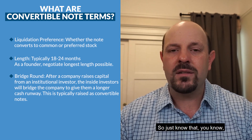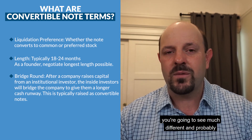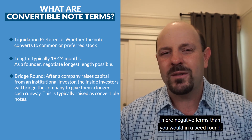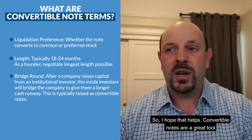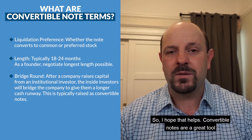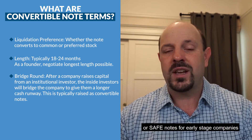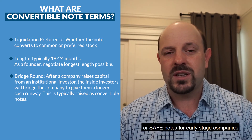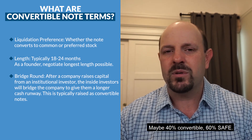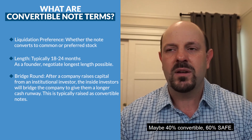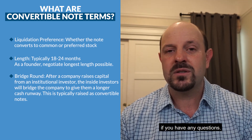Just know that in a bridge round situation, you're going to see much different — and probably more negative — terms than in a seed round. Convertible notes are a great tool for fundraising and very common. For early-stage companies it's either convertible notes or SAFE notes — probably around 40 percent convertible and 60 percent SAFE. Hit us up at kruze consulting dot com if you have any questions.